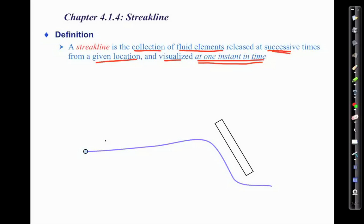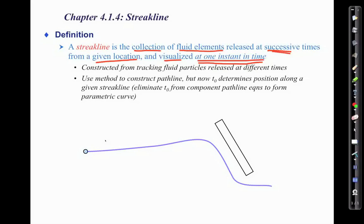For this example we're going to look again at this oscillating plate. This is constructed from tracking fluid particles released at different times, and we can utilize what we have from our path line. But instead, t_naught the release time now determines the position along the streak line, and so this is the parameterization of our streak line curve. For our path line, the instant t was our parameter because that controlled where you were along the history of that individual particle.